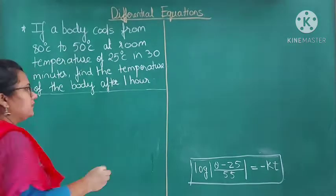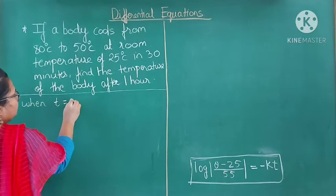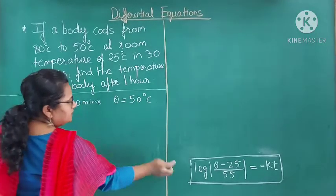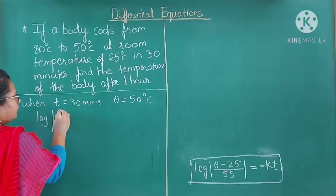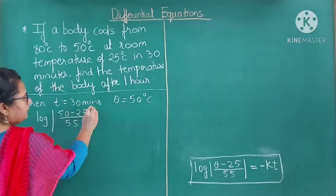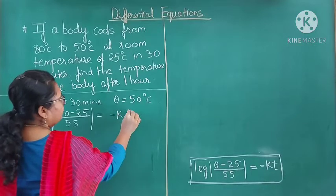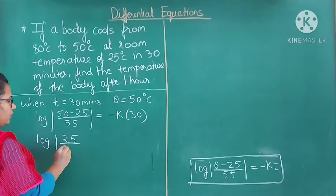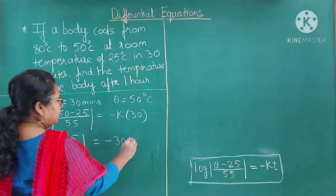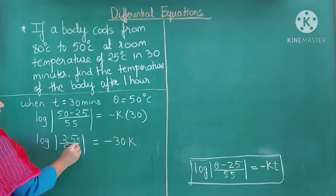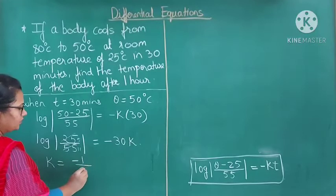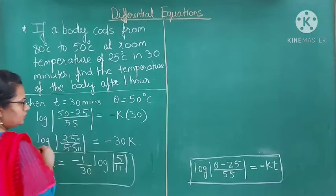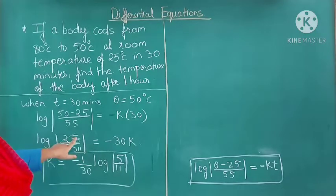In 30 minutes the temperature goes from 80° to 50°. So when t = 30 minutes, θ = 50°C. Substituting into the expression: log((50 − 25)/55) = −k·30, that is log(25/55) = −30k. Simplifying 25/55 gives 5/11. Therefore k = −(1/30)·log(5/11).